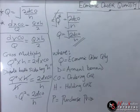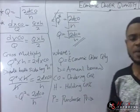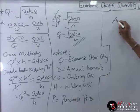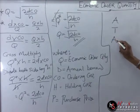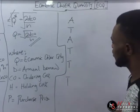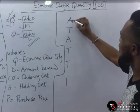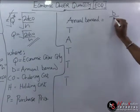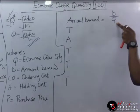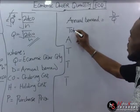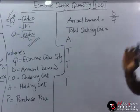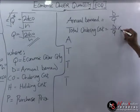Now, everything we have here has a formula, and we need to know them. First, for the number of orders — that is, the annual demand divided by EOQ, which is D over Q. Then we have the total ordering costs, which is D over Q times CO.